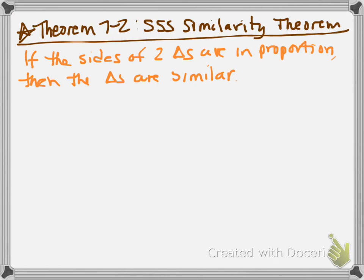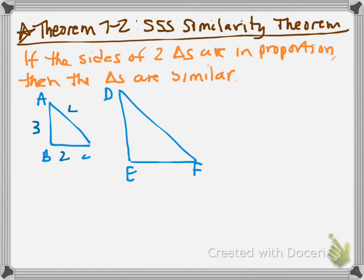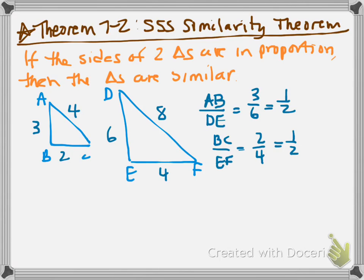So let's investigate this one. A, B, C, D, E, F. And we'll put numbers in. Two, three, four. Four, six, eight. So if we do corresponding sides, AB over DE, we get three over six, which simplifies to one half. If we do BC to EF, we have two as to four, which simplifies to one half. If we have AC to DF, we have four over eight, which simplifies to one half.